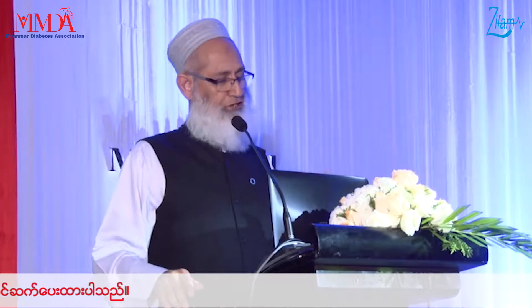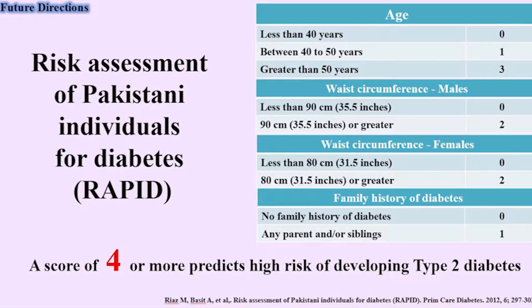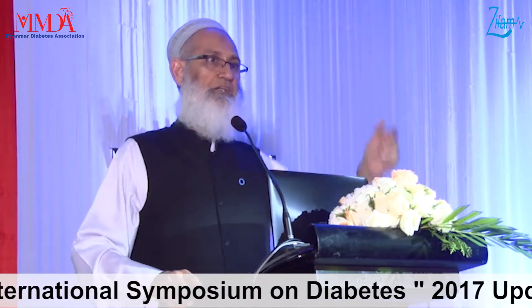So we developed this score, which is called the RAPID score — risk assessment of Pakistani individuals for diabetes. I know India has developed an India score with Ramachandran leading. There is a Finland score by Yaku Tomliheto, an Australian score by Stephen Collegary, and an English score by Kamlesh Kunti.